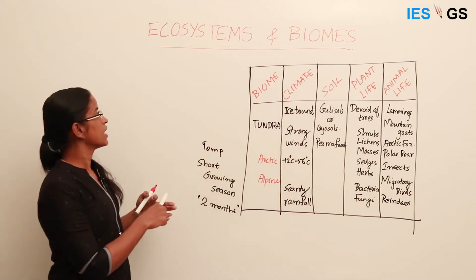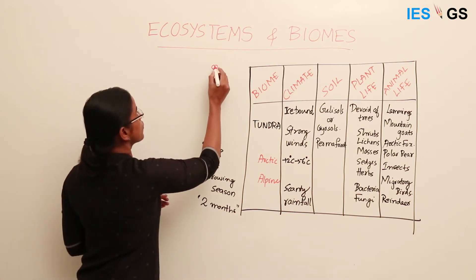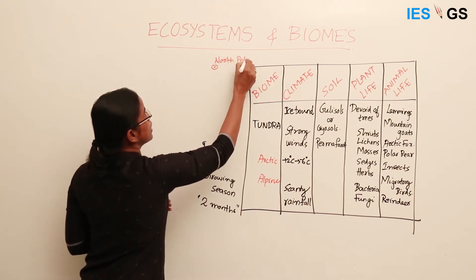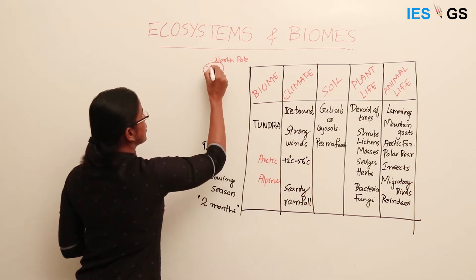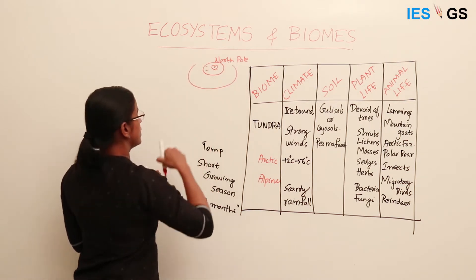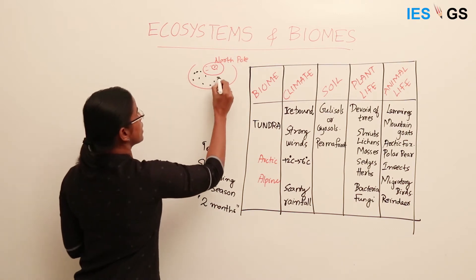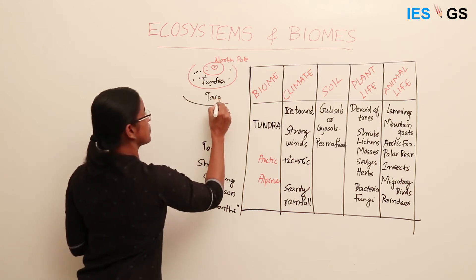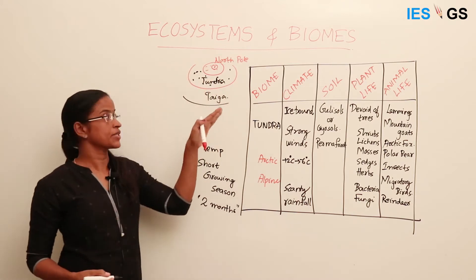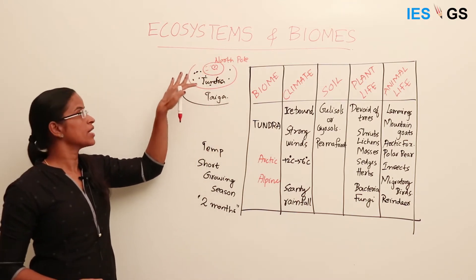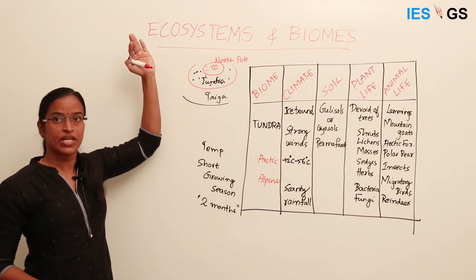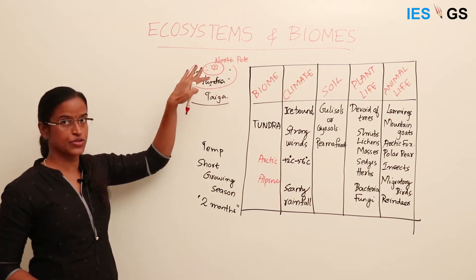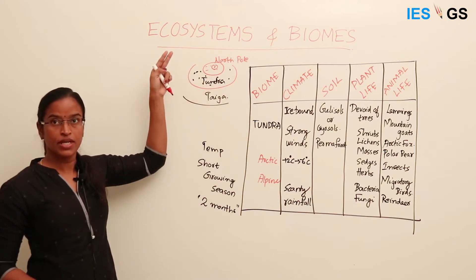Where is this ecosystem found? It is found south of the poles. Around the North Pole there is an ice-covered region, and beyond that exists the Tundra region. Below that will be the Taiga Ecosystem. So north of the Taiga Ecosystem occurs the Tundra Ecosystem, covering the northern regions of Russia, Greenland, and North America.